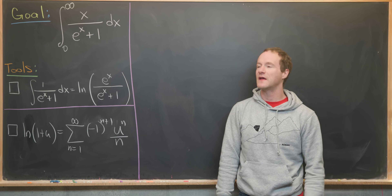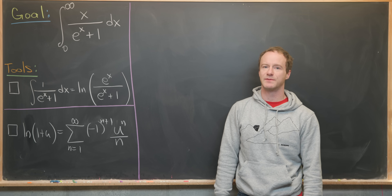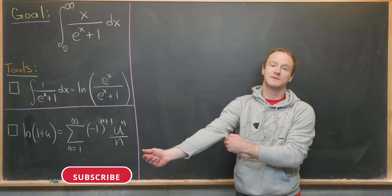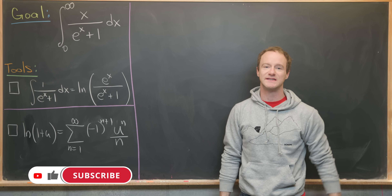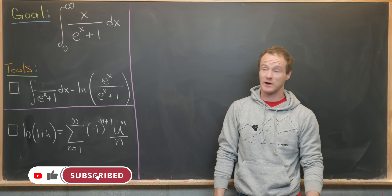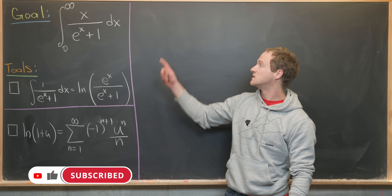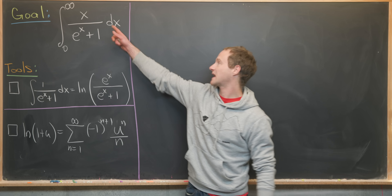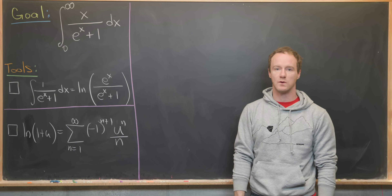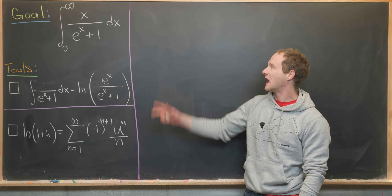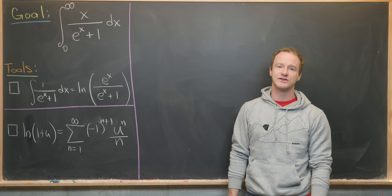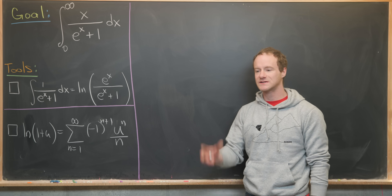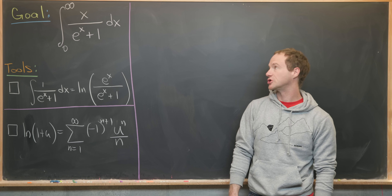Today I've got a nice integral suggested by a viewer, and I welcome suggestions. Sometimes I don't always see them but I'm happy to get them when I do. We want to look at the integral from zero to infinity of x over e to the x plus one. Looking at the integrand we see that it's a polynomial times a more complicated function.